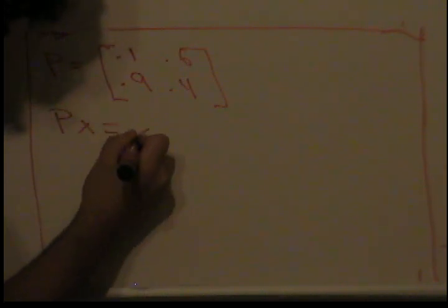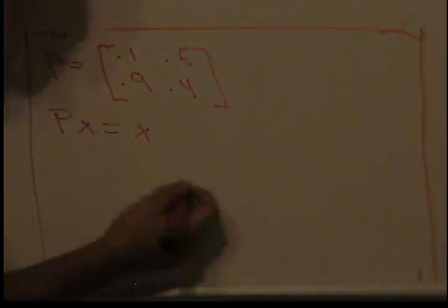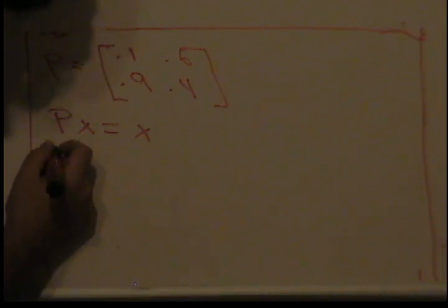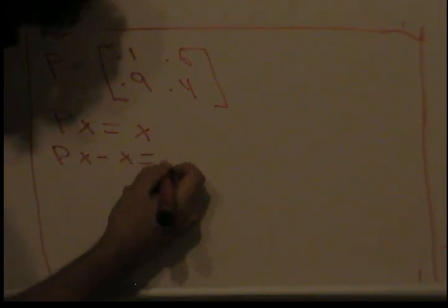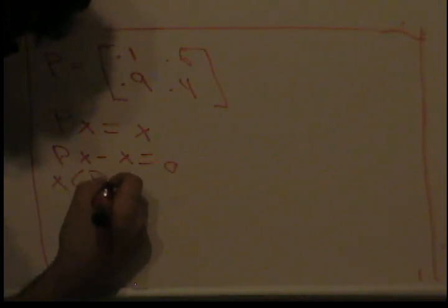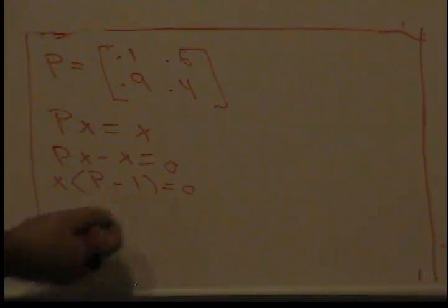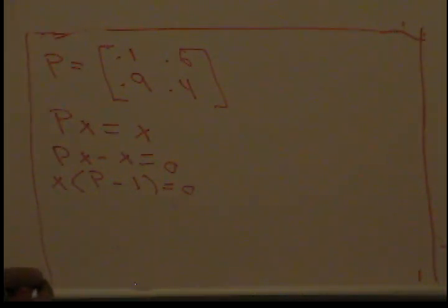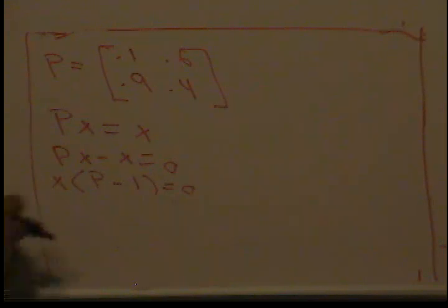So first we have to solve this equation where we have P times X equals X. Earlier on we called X Q, I'm just using symbol X now. So I'm gonna subtract X from both sides, that equals 0. If I factor out an X, I get P minus 1 times X equals 0, where the 1 over here is simply the identity matrix, which for us is going to be a 2 by 2 matrix.